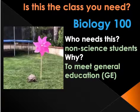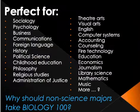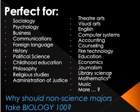This class is Bio 100. Who would specifically need this? You need this if you are a non-science major student — it meets your general education requirements. This is good for people in any of the degrees you see here; any of these would be a great Bio 100 to get in your lab science.